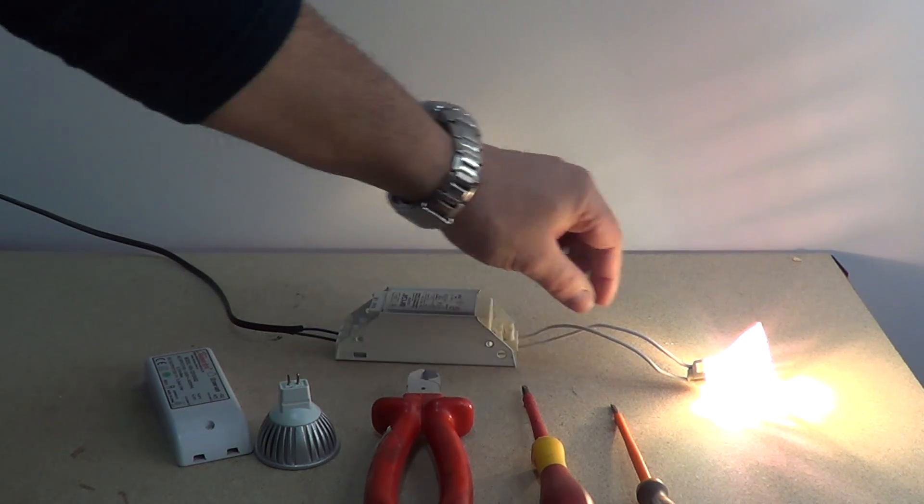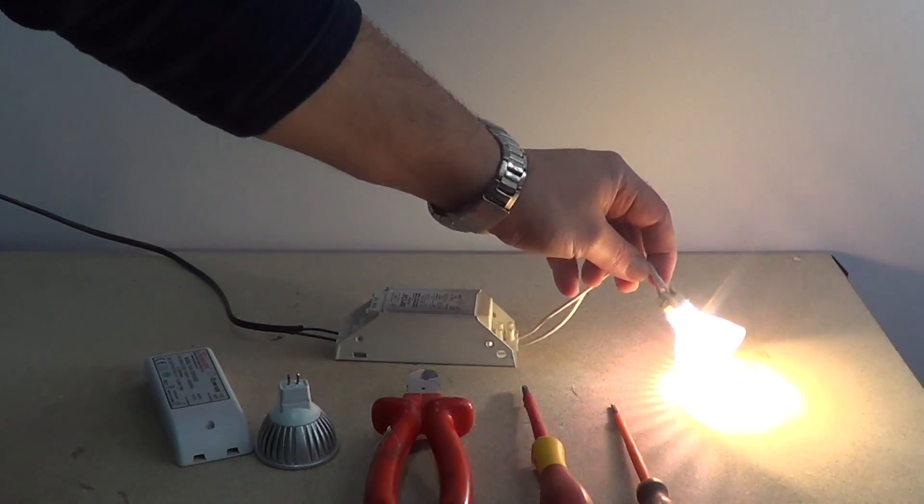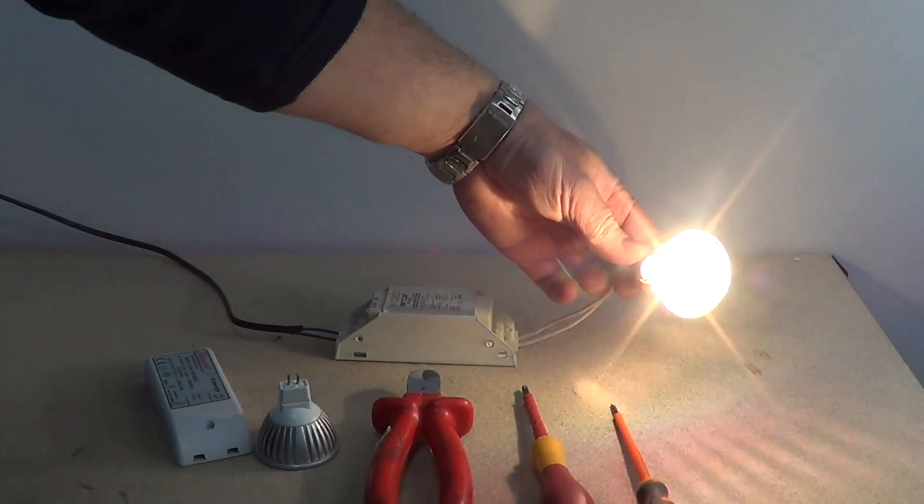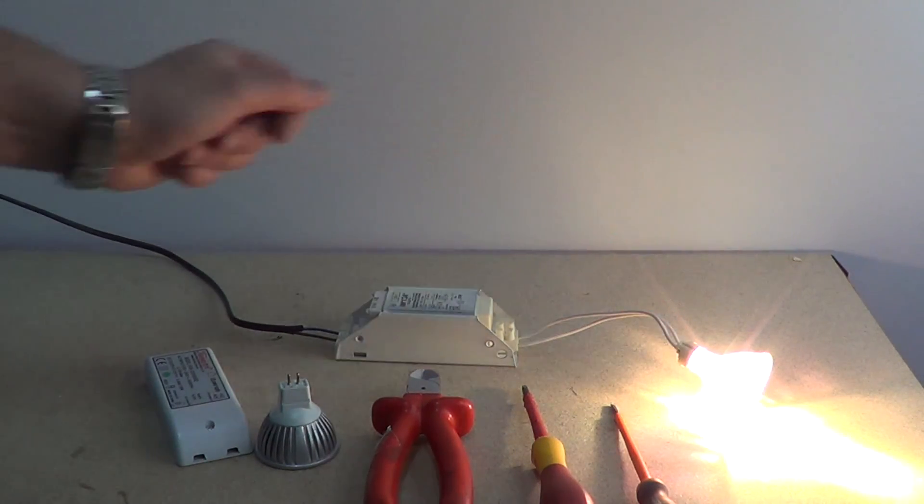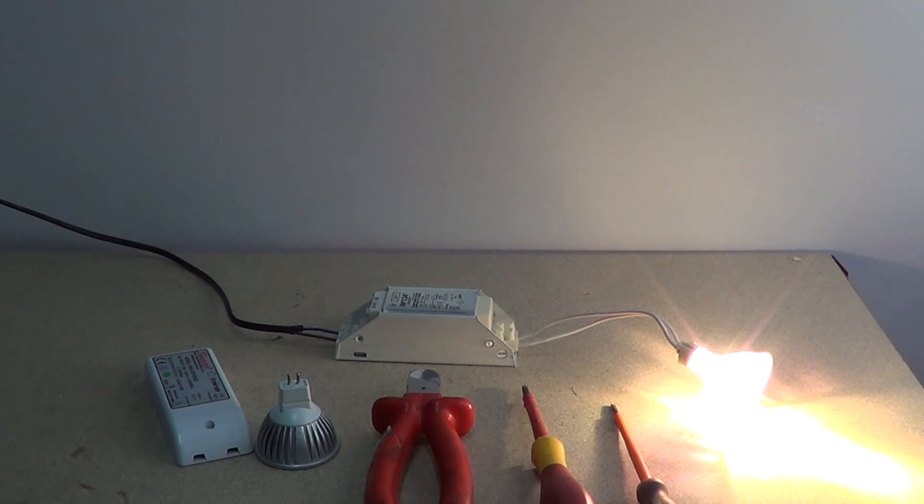The first thing we need to do is remove the bulb from the ceiling. Be careful with the bulb because it can be very hot. It is normally best to turn it off for a while and then remove it.